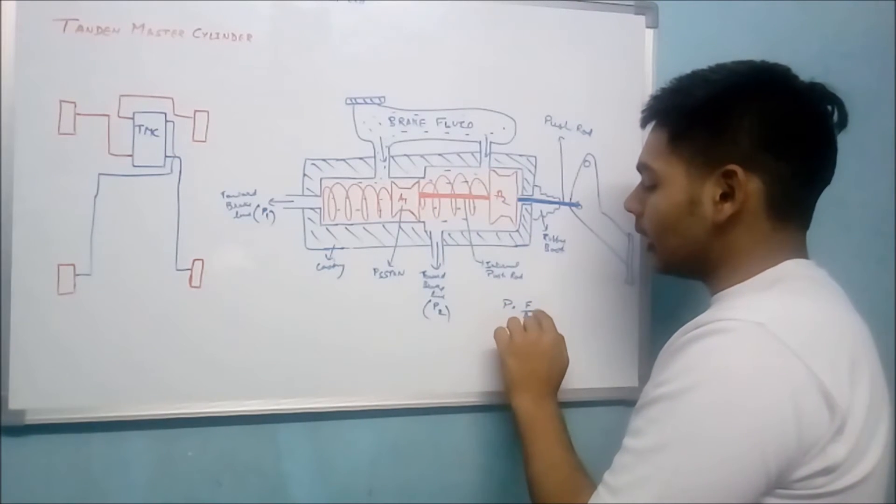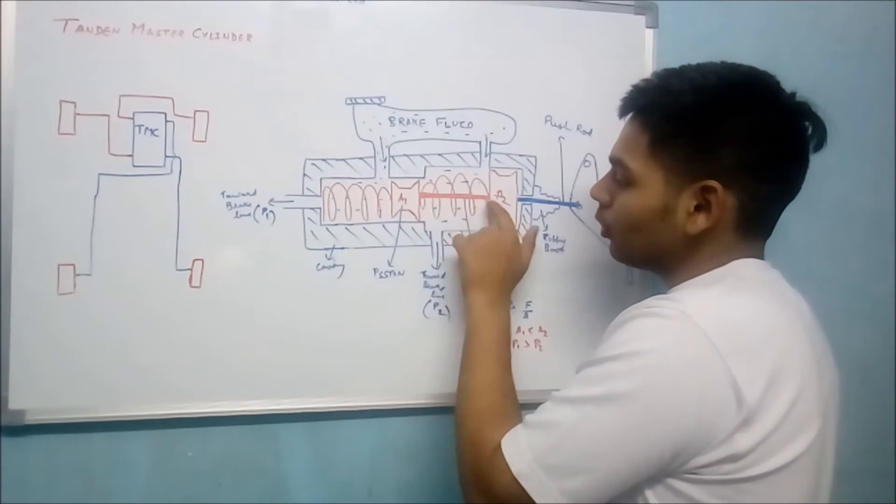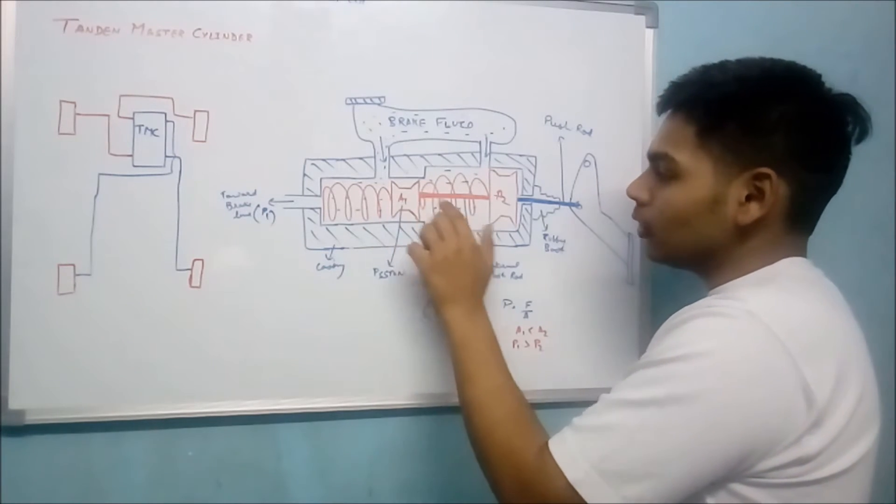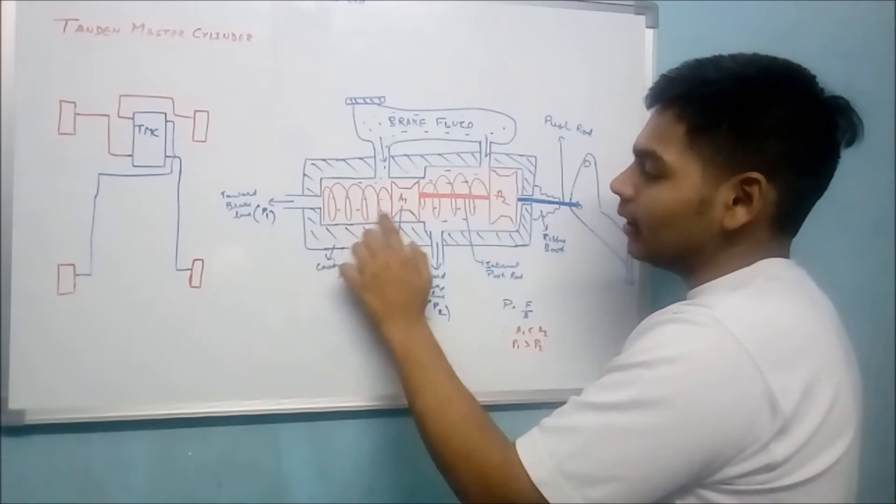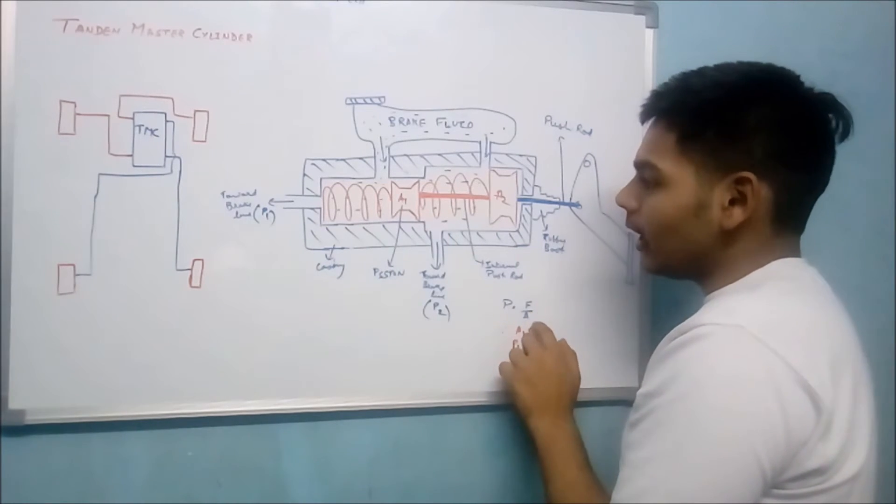Then the force travels through this internal push rod to piston 1, so the pressure created in this region by this piston will be equal to force upon area A1.